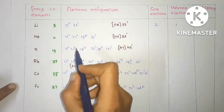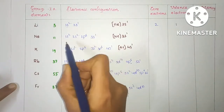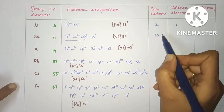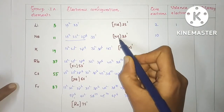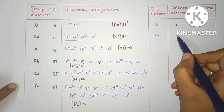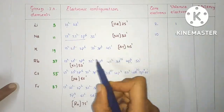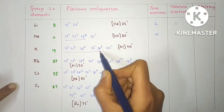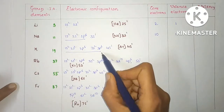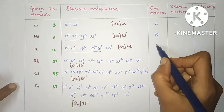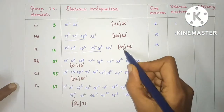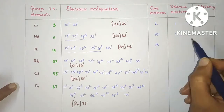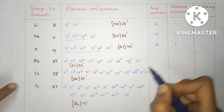For sodium, the first and second shells are the innermost shells. The number of core electrons is 10, which is the neon gas configuration electrons, and the valence electrons are 1. For potassium, three shells are the innermost shells and the core electrons are 18, which is the argon inert gas configuration electrons. The valence electrons are 1.